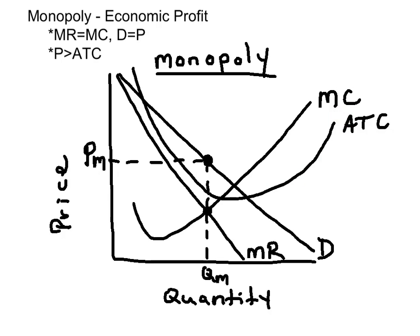To illustrate an economic profit, you want the unregulated monopolist to produce where marginal revenue is equal to marginal cost, and then the price will be on the demand curve. Demand equals price, which is also the monopolist's average revenue. To show a profit, the price should exceed the average total cost at the MR equals MC point.